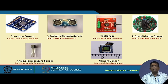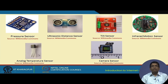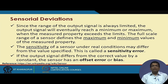Here are pictures of a few more sensors: a pressure sensor, an ultrasonic distance sensor, a tilt sensor, an infrared motion sensor, a camera sensor, and an analog temperature sensor. The analog temperature sensor has three pins: one for plus five volts, one for ground (zero volts), and the middle pin for the output.